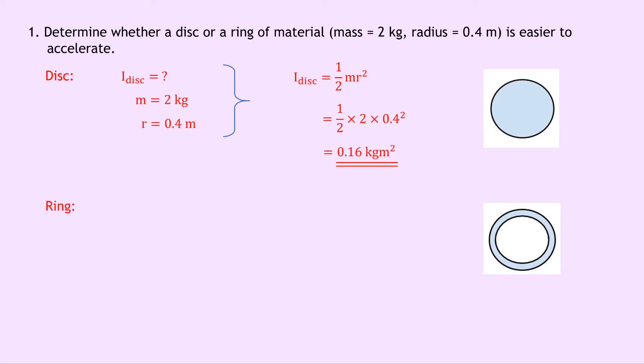Looking at the ring this time, the moment of inertia of the ring is what we're trying to find. The mass is again 2 kilograms and the distance from the axis of rotation is again 0.4 meters.